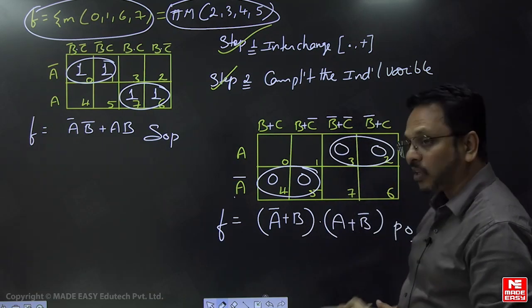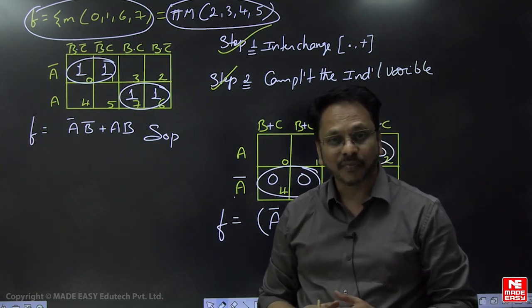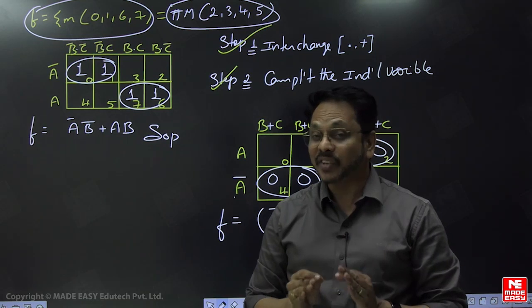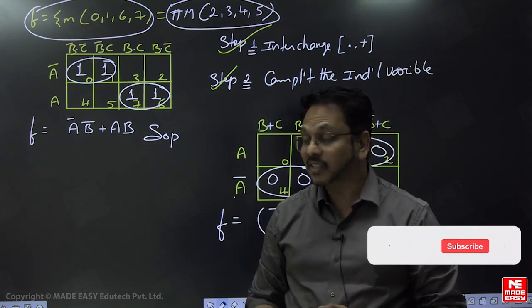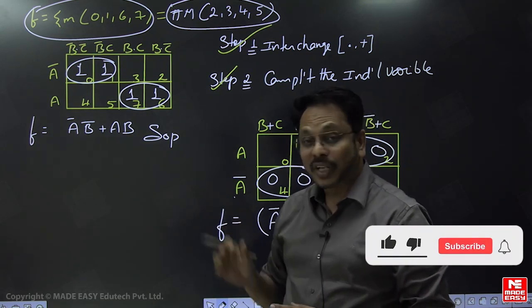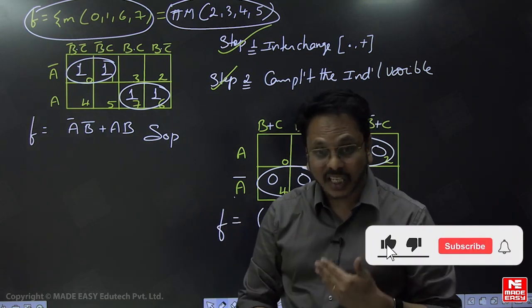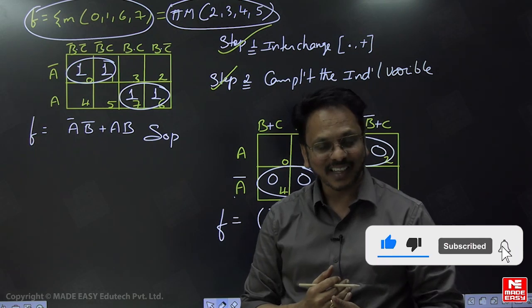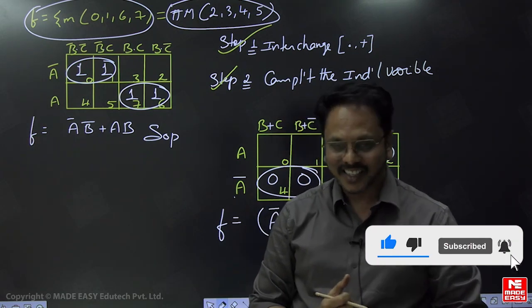This is the best method to convert a given SOP to POS form without any confusion, using the K-map modifications. Thank you.